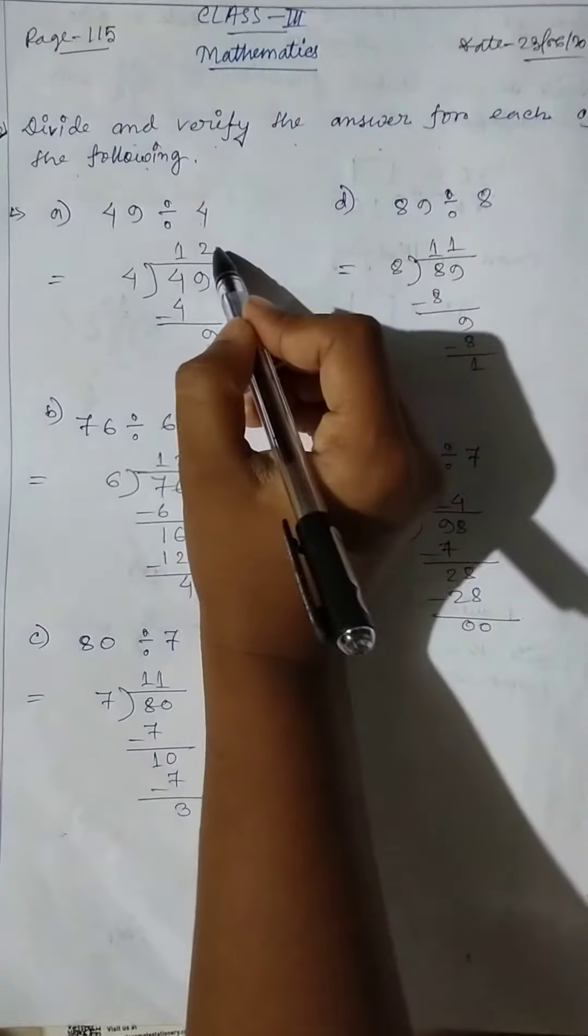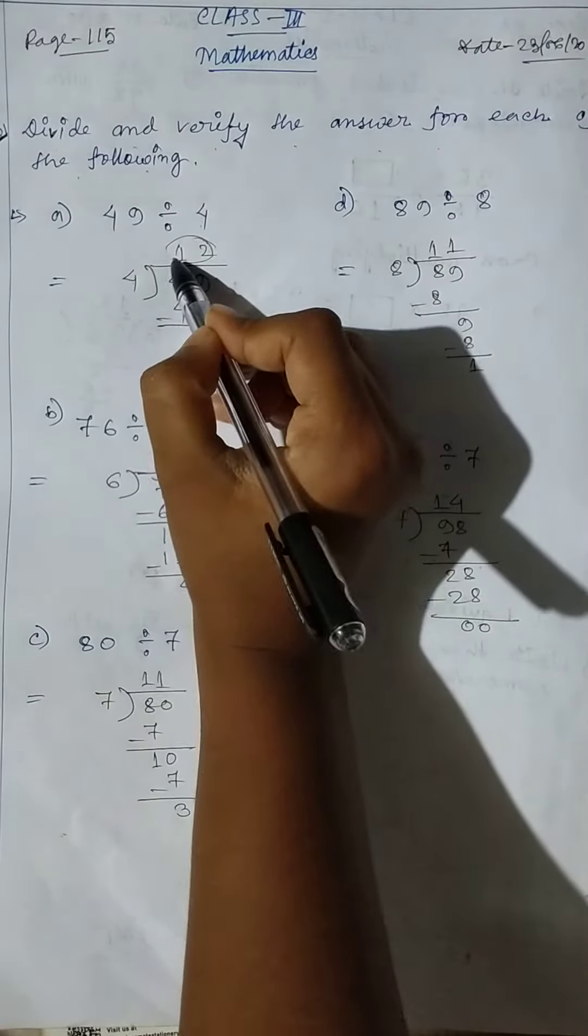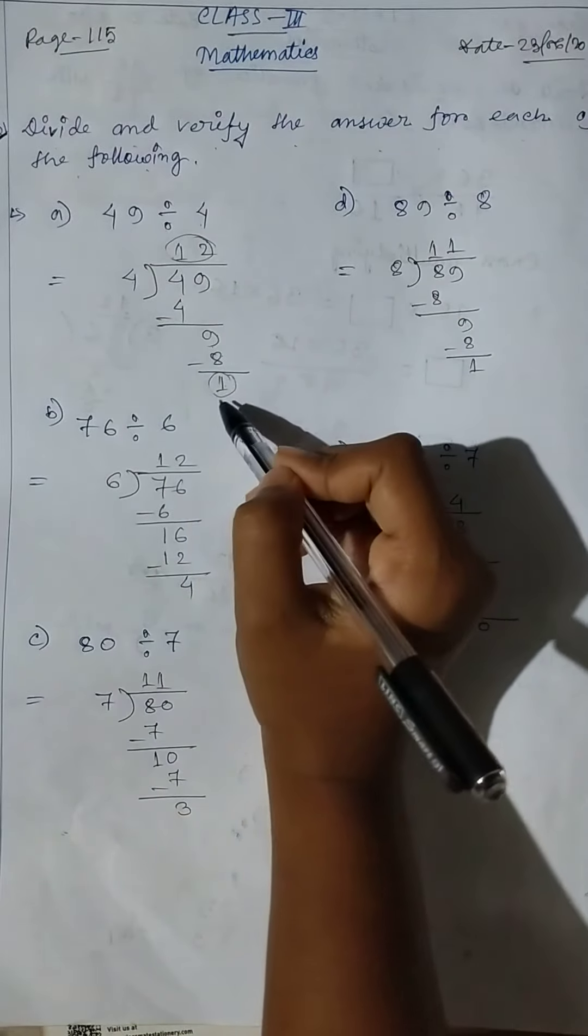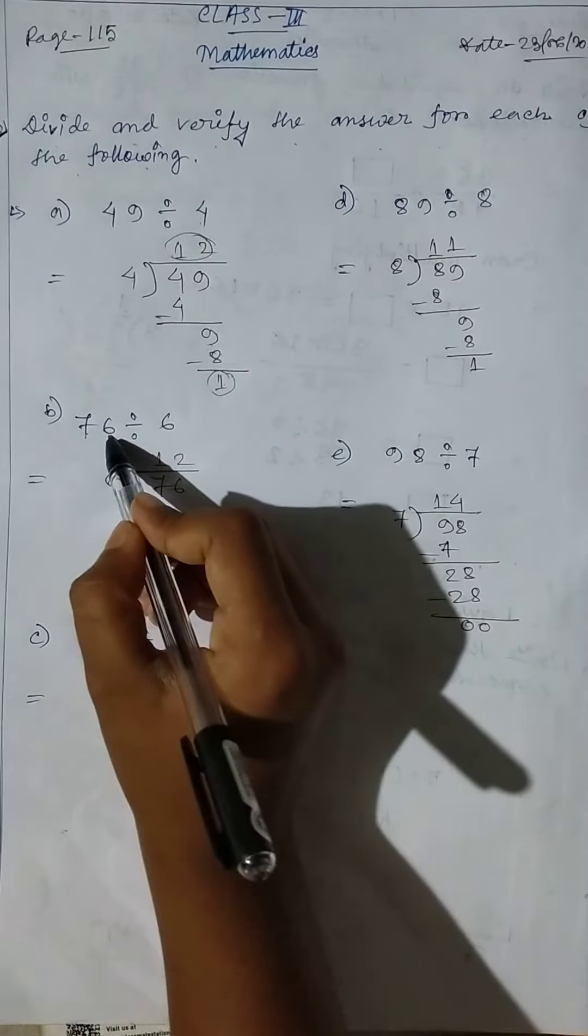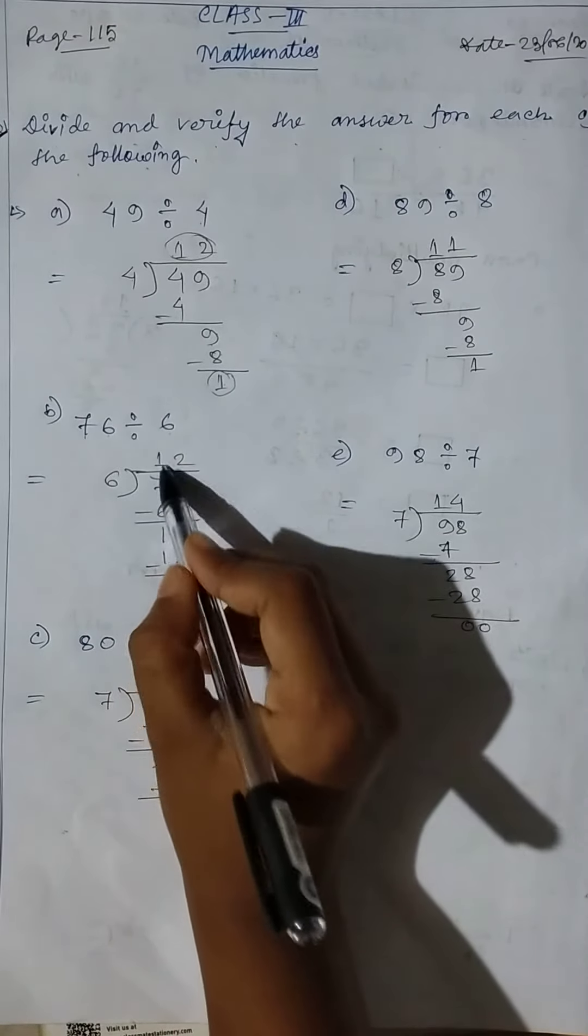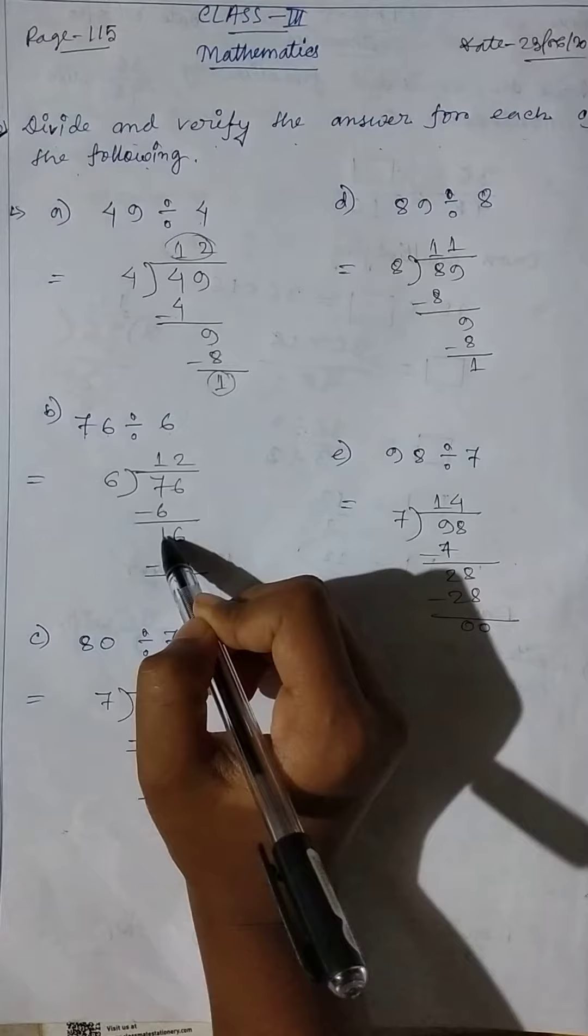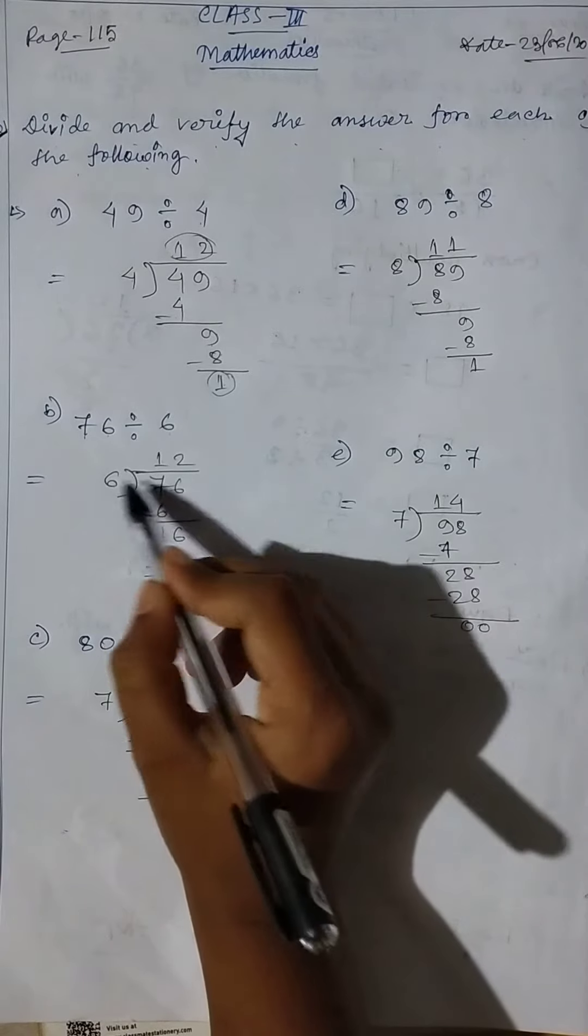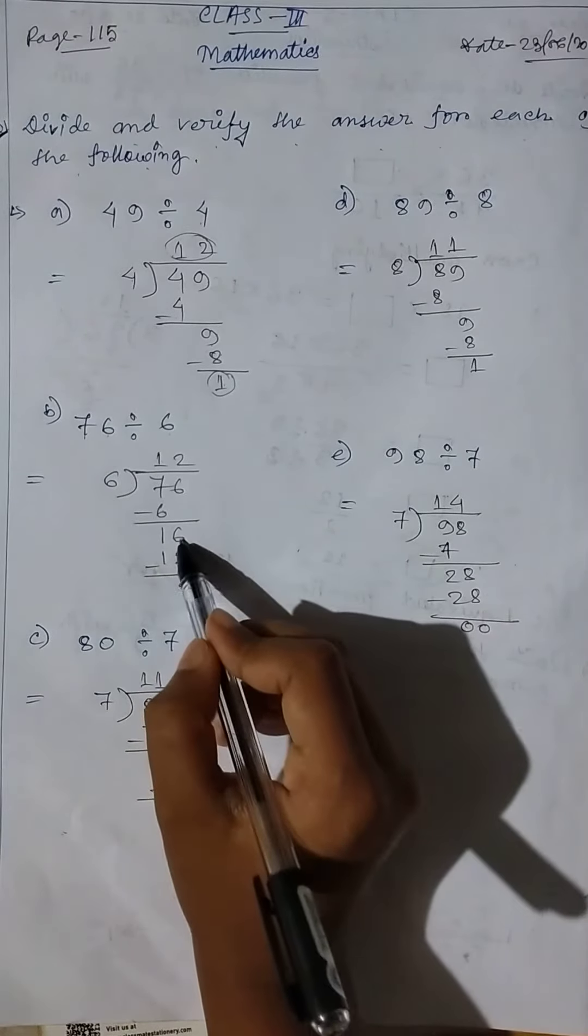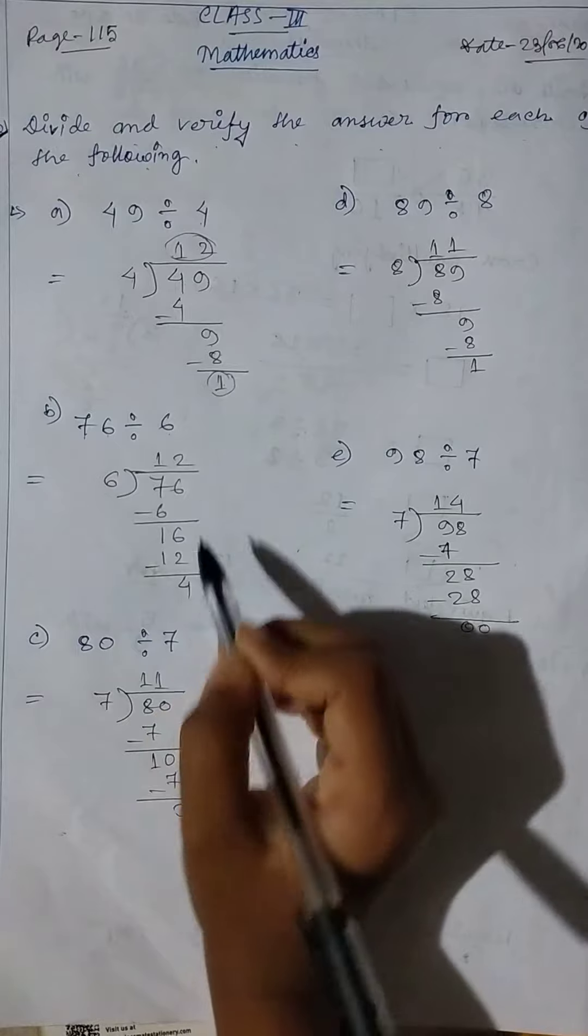Then 76 divided by 6. 6 ones are 6, 7 minus 6 equals 1. Then 6 here, 6 twos are 12, 16 minus 12 equals 4. So here, quotient 12 and remainder 4. Then 80 divided by 7...